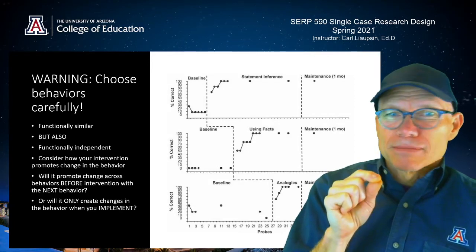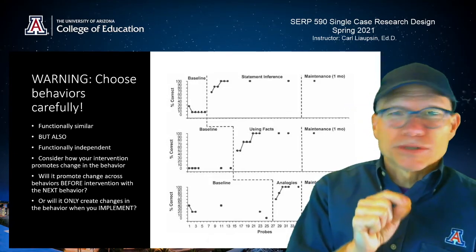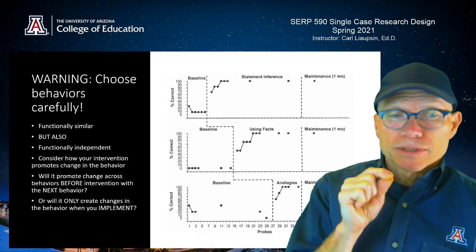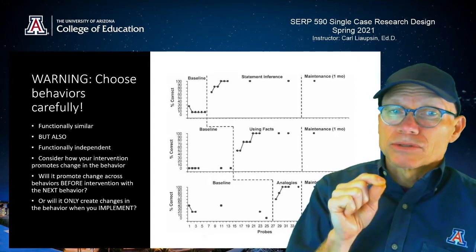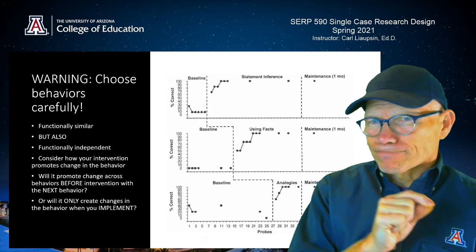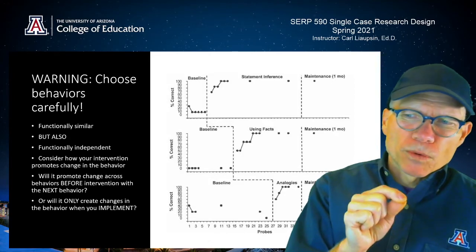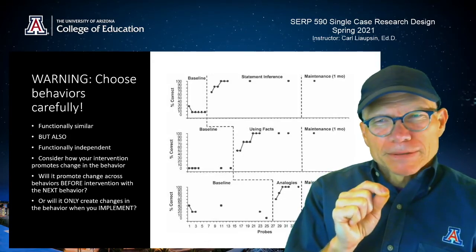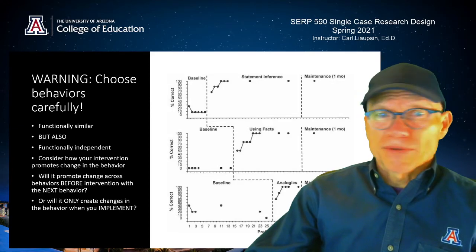You're going to get some interference across behaviors, so you've got to consider really carefully if you're going to do this. Consider how the intervention promotes change — are you using some kind of strong reinforcement technique that you can apply to functionally similar behaviors the student needs to learn? You have to consider whether it's going to promote change across your behaviors before you implement with the next behavior, or will it only create changes when you implement. Functionally similar, functionally independent — read about it in the book, they do a great job with lots of examples.